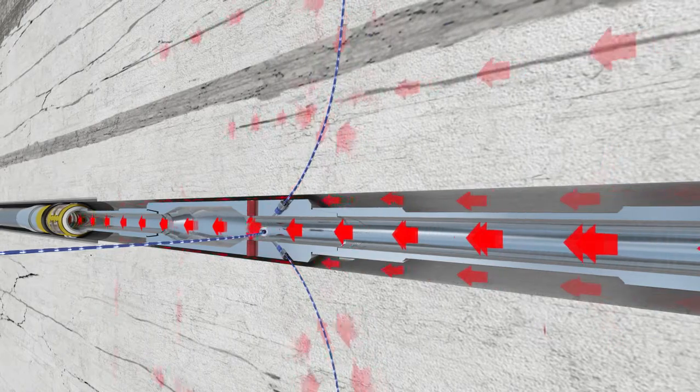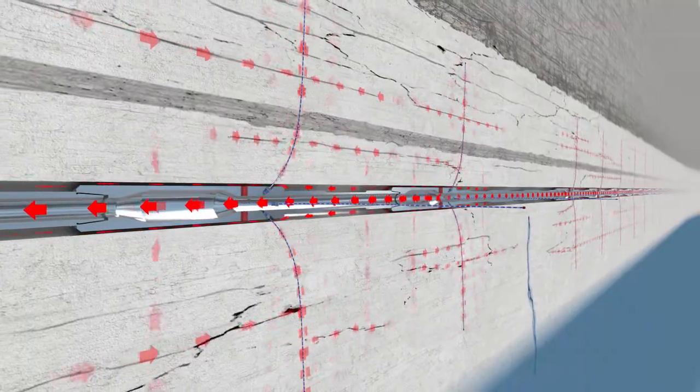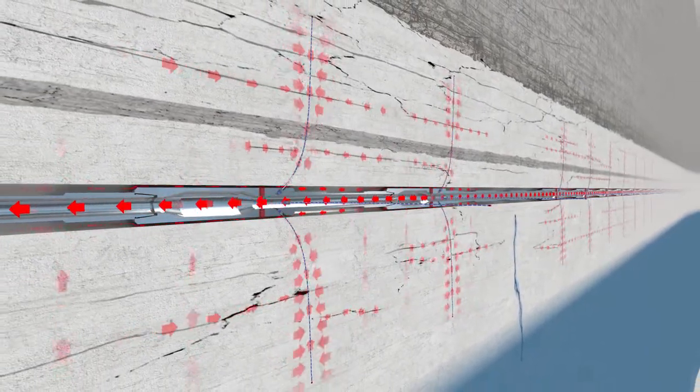The well is allowed to produce. Production occurs in the annulus and all the needle annuli. Reservoir contact has been greatly increased, significantly increasing production rates.